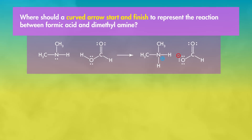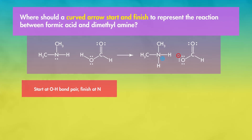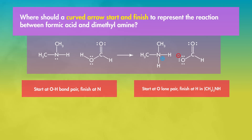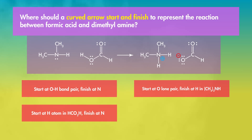See if you can correctly represent the curved arrows for this acid-base reaction. It's probably a good idea for you to draw these structures out yourself. Where should a curved arrow start and finish to represent the reaction between formic acid and dimethylamine? Options: start at an OH bond pair and finish at the N; start at an O lone pair and finish at the H in dimethylamine; or start at a hydrogen atom in formic acid and finish at nitrogen.